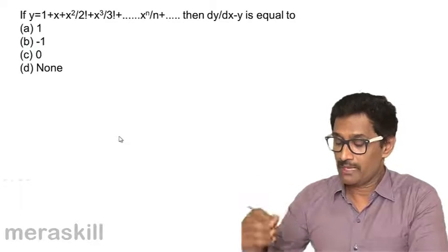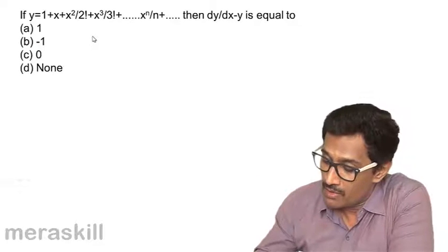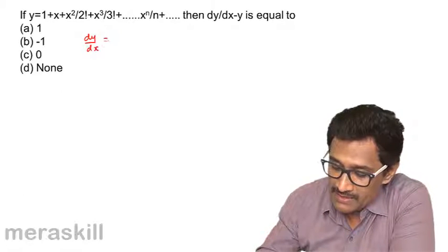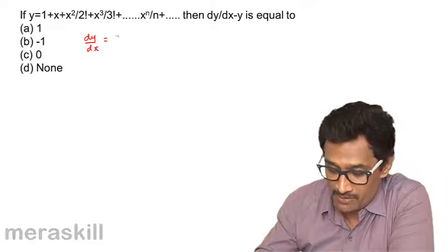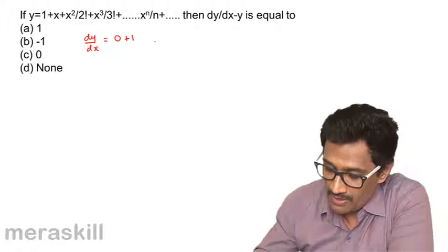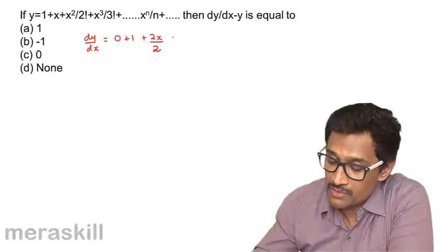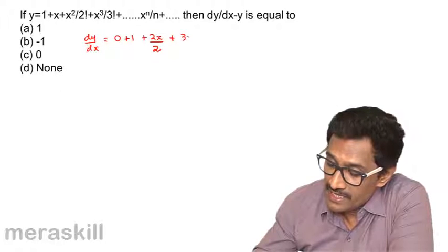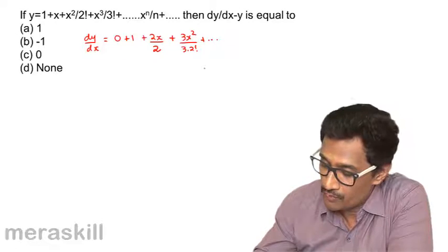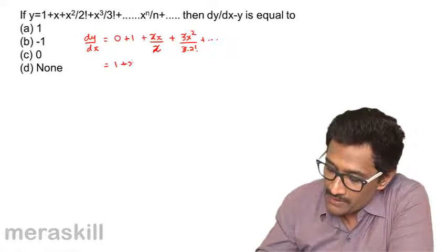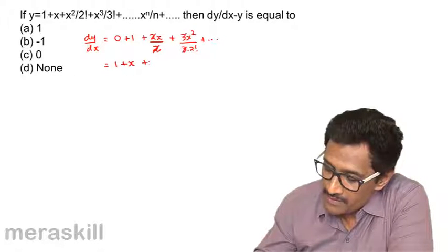Now we have y = 1 + x + x²/2! + 3x²/3! and so on. Calculate dy/dx - y. The derivative of 1 is 0, derivative of x is 1, derivative of x²/2! is 2x/2! = x, derivative of 3x²/3! is 3x²/3! = x²/2!, and so on. This eventually turns out to be 1 + x + x²/2! and so on.